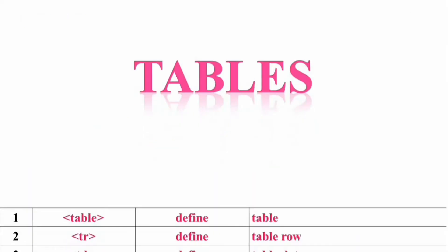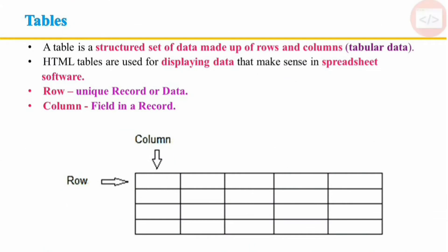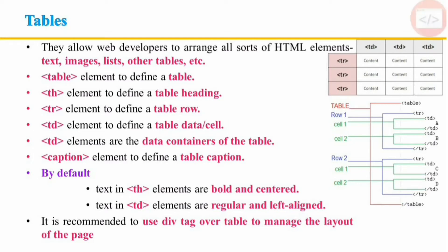HTML tables: a table is a structured set of data made up of rows and columns, where data is logically arranged in rows and columns similar to a spreadsheet. Each row represents a unique record and each column represents a field in a record. HTML tables allow web developers to arrange data like text, images, links, and other tables into rows and columns of cells. The table tag defines an HTML table. The table header is defined with the th tag. Each table row is defined with the tr tag. Table data or cell is defined with the td tag. The caption element is used to define a table caption. By default, th elements are bold and centered, and td elements are regular and left aligned.